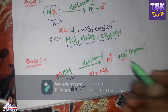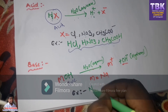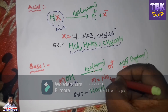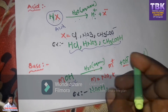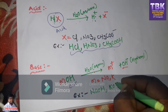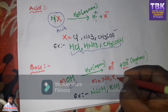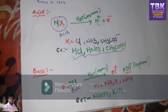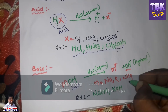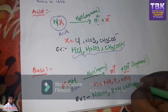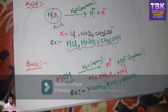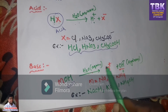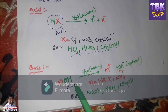For examples of bases: if M equals Na, that is NaOH, sodium hydroxide. If M equals K, that is KOH, potassium hydroxide. If M equals NH4 plus, that is NH4OH, ammonium hydroxide. The chemical substance which produces hydroxyl ions in aqueous solution is called a base.